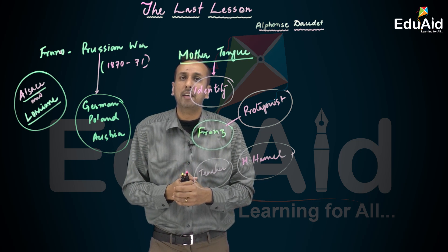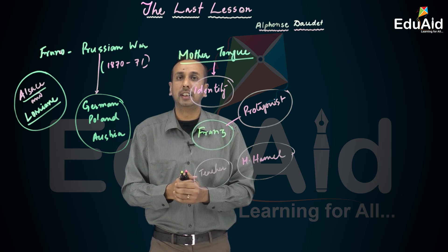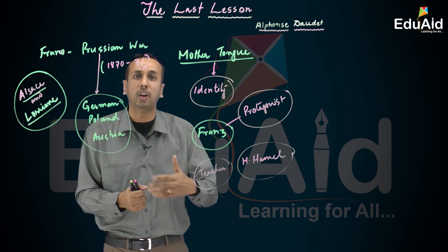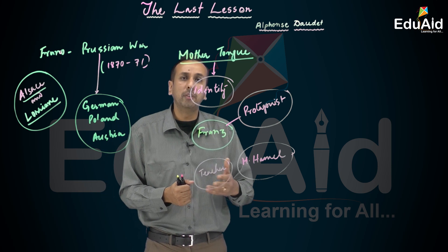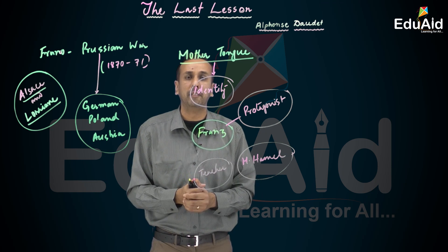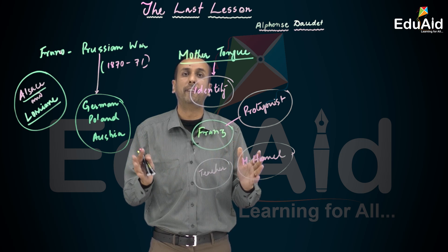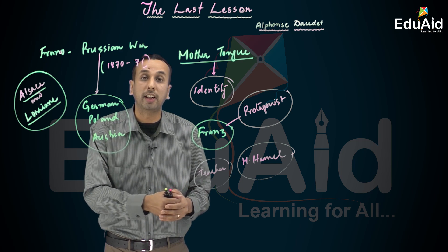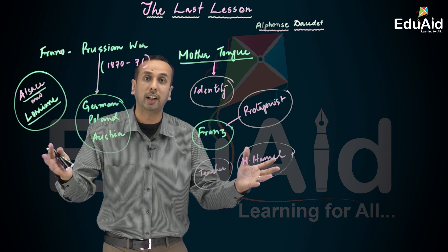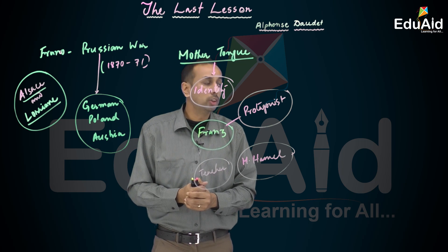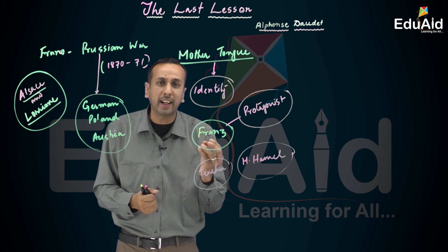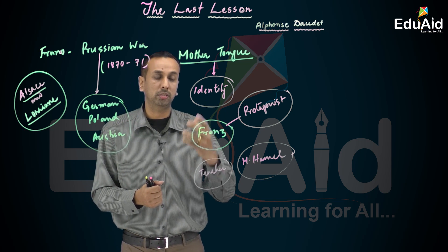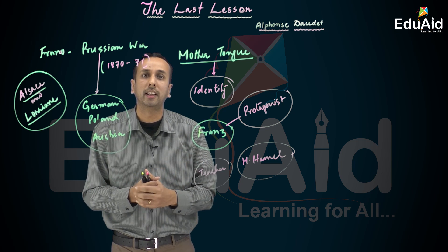He couldn't make out what might be the reason for his telling like that. While he reached the little garden of M. Hamel, he thought he would be able to easily enter the classroom, but that day it was quite different. There was a quietness, as quiet as a Sunday morning.